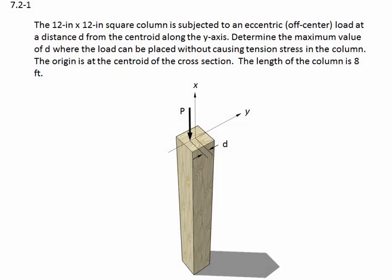Problem 7.2-1. The 12 inch by 12 inch square column is subjected to an eccentric, or off-center, load at a distance d from the centroid along the y-axis. Determine the maximum value of d where the load can be placed without causing tension stress in the column. The origin is at the centroid of the cross-section. The length of the column is 8 feet.